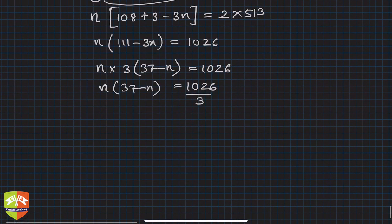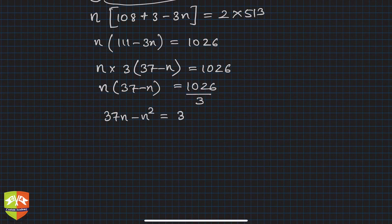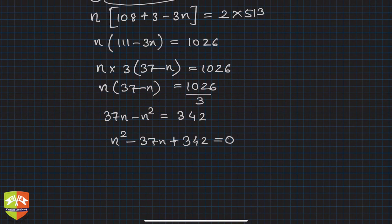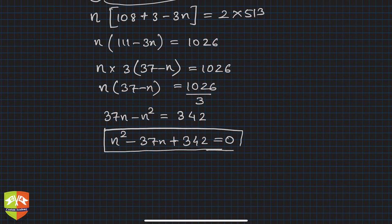So the equation is n² - 37n + 342 = 0. This is a quadratic equation we need to solve. Either go for Sridharacharya's rule or splitting the middle term will also help.